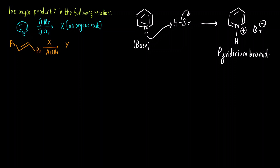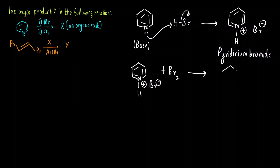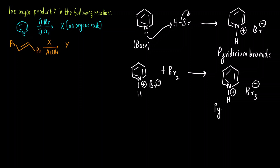Pyridinium bromide (NH⁺ Br⁻) then reacts with Br2. What we get is a species with NH⁺ and Br3⁻. This compound is called pyridinium tribromide.